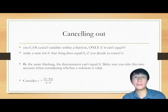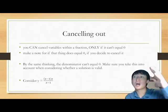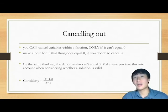Cancelling out. You can cancel variables within a fraction, only if it can't equal 0. A lot of the time people are scared about cancelling variables, but you can do it, as long as there's a condition somewhere that says that can't equal 0. If you do decide to cancel it, and it can equal 0, what you can do is make a note that it could potentially equal 0 and come back to it afterwards.